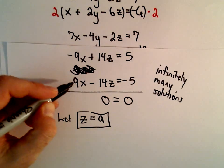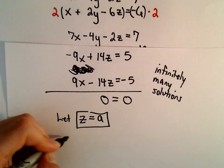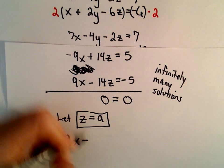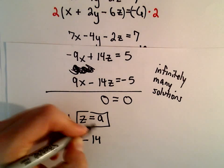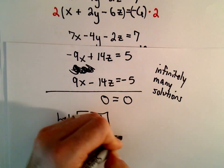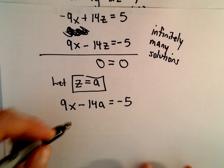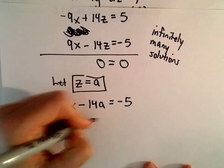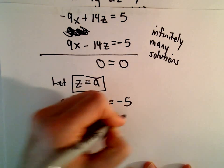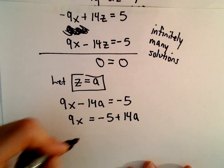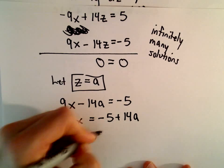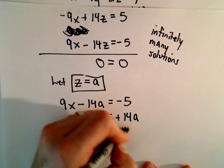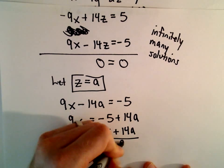So if z equals a, we've got our equation, let's see, we would have 9x minus 14 times z, which is a, equals negative 5. We can add 14a to both sides. And then if we divide by 9, we'll have negative 5 plus 14a divided by 9.